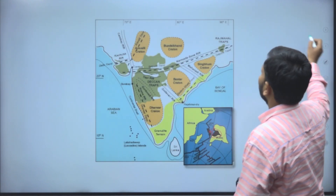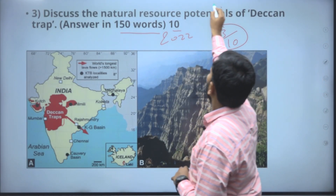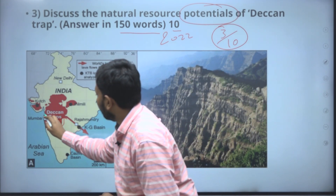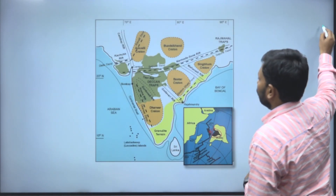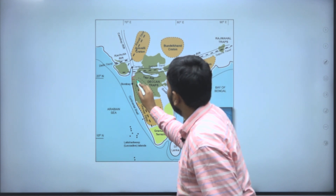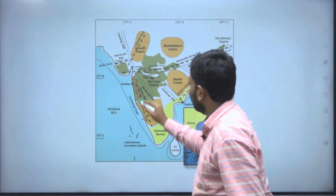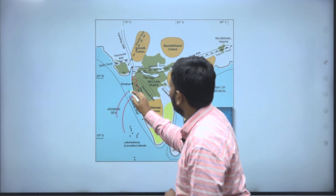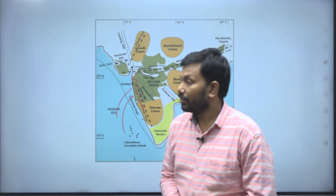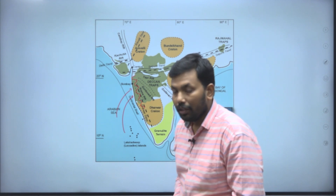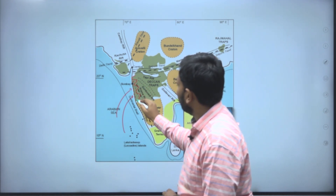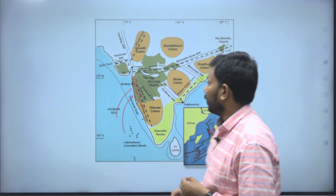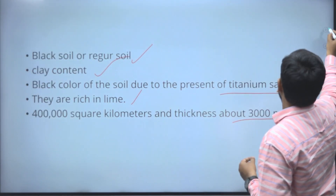Look carefully at another resource potential. The Western Ghats are present here, and the southwest monsoon is stopped by the Deccan Trap, resulting in a huge amount of rainfall in the region. You can mention that point to earn an extra mark after discussing the main topic.